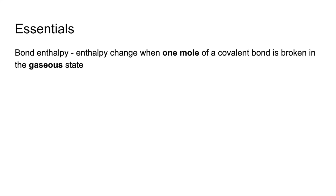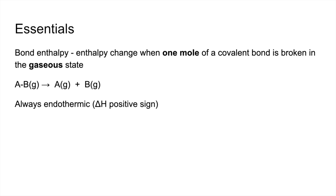Bond enthalpy is defined as the enthalpy change when one mole of a covalent bond is broken in the gaseous state. We can represent that by an equation: the molecule or bond AB gas going to A gas plus B gas. Bond enthalpies are always endothermic, so the delta H for all bond enthalpies will have a positive sign.